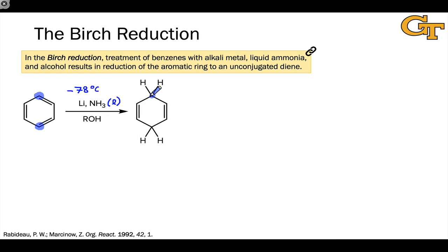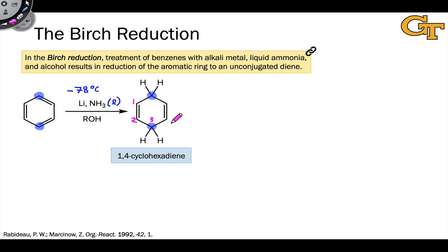The resulting product is a 1,4-cyclohexadiene, as we can see if we number the carbons around the ring. It's actually unconjugated, which is somewhat interesting — SP3 hybridized carbons separate the two alkene groups. It's actually difficult to think of another way to make 1,4-cyclohexadienes, and benzene is about as cheap and plentiful as you can get for organic starting materials. So the Birch reduction does have synthetic utility in preparing these 1,4-cyclohexadiene systems. We can also run this reaction on substituted benzenes, which leads to products with more complexity.